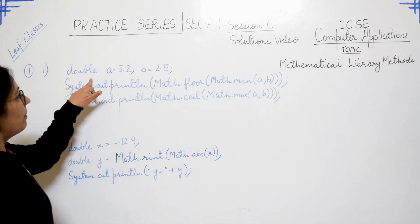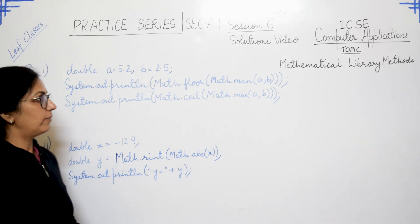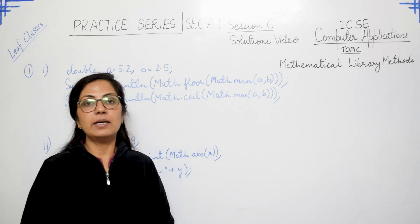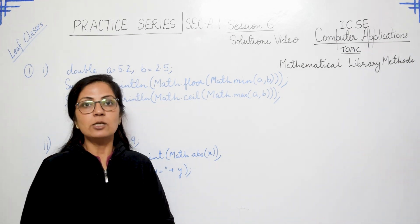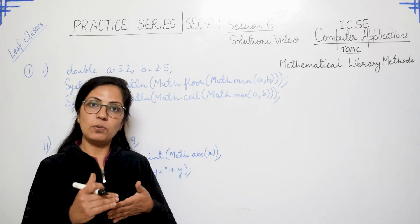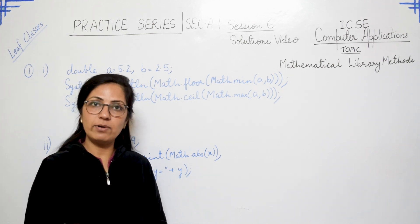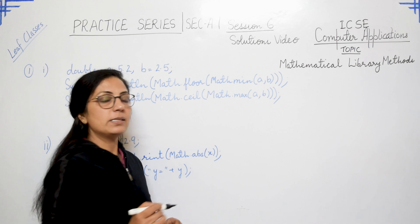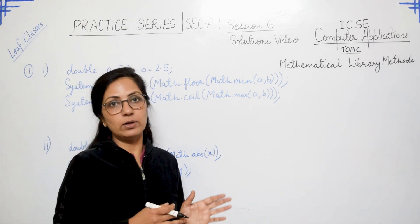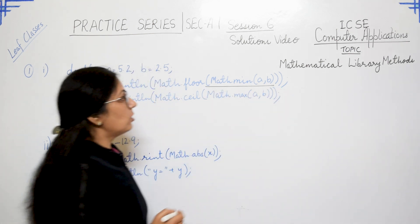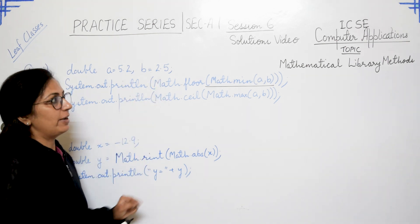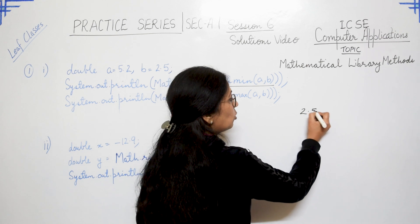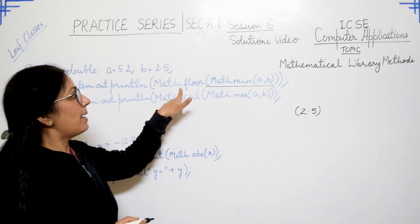The first question: double A equals 5.2 and B equals 2.5. System.out.println Math.floor(Math.min(a, b)). One thing to note: if println is used, it shifts the cursor to the next line; if print is used, the cursor remains on the same line. We always solve the innermost bracket first. So Math.min(a, b) — that is Math.min(5.2, 2.5) — returns the minimum, which is 2.5. Then Math.floor is applied to 2.5.